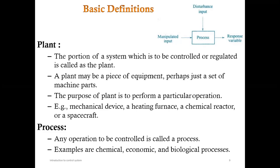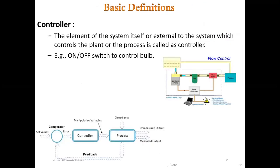Any operation that is to be controlled is called a process — examples are chemical, economic, and biological processes. The controller is the element of the system, or external to the system, which controls the plant or process — for example, an on/off switch to control a bulb. The comparator compares, the controller controls, and the manipulated variable is given to the process; from there we get measured and unmeasured outputs.